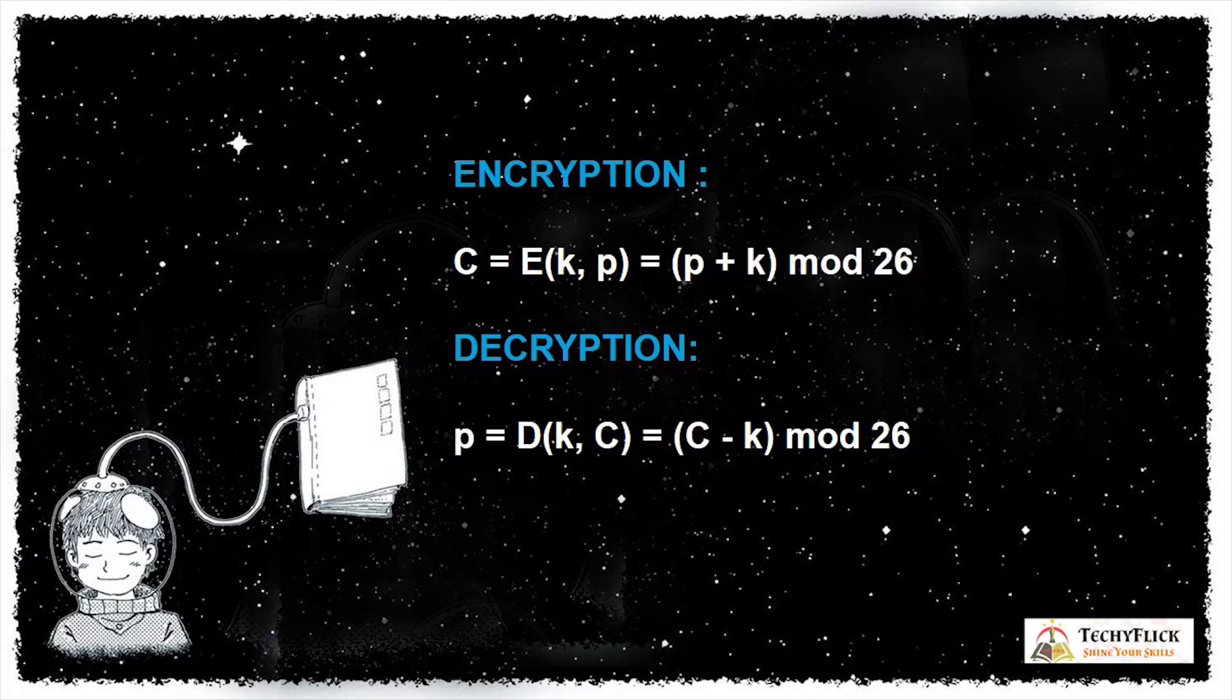This is the formula for encryption and decryption. For encryption, C denotes cipher text, that is equal to E for encryption, open bracket K for key and P for the plain text, that is equal to P plus K mod 26.